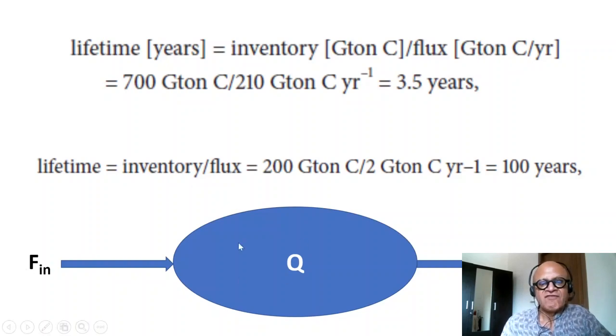That's what is shown here, the inventory divided by the flux. So, 200 gigatons divided by, let's say, 2 gigaton carbon per year of flux, which would give you a hundred year lifetime, which is much more the correct order of magnitude.